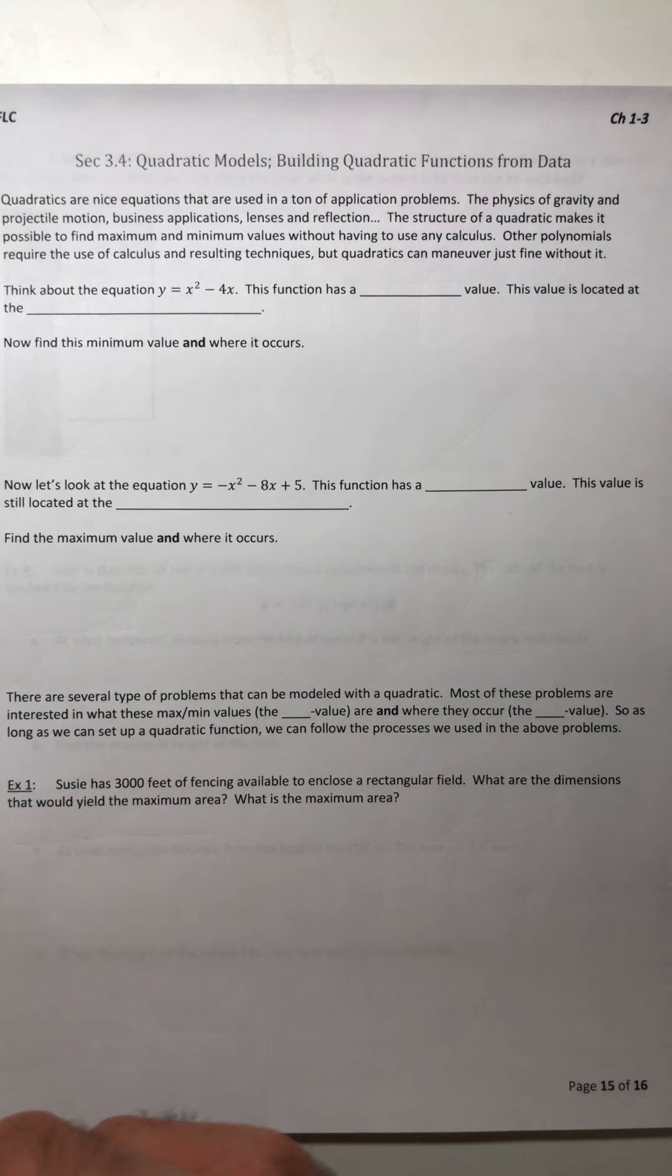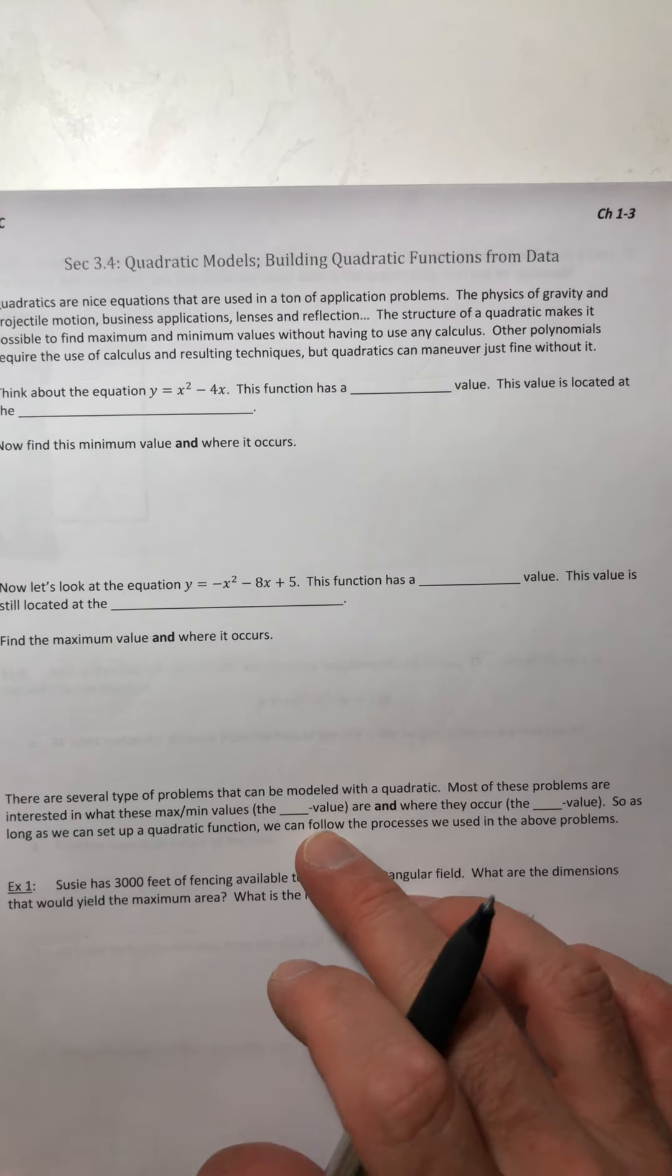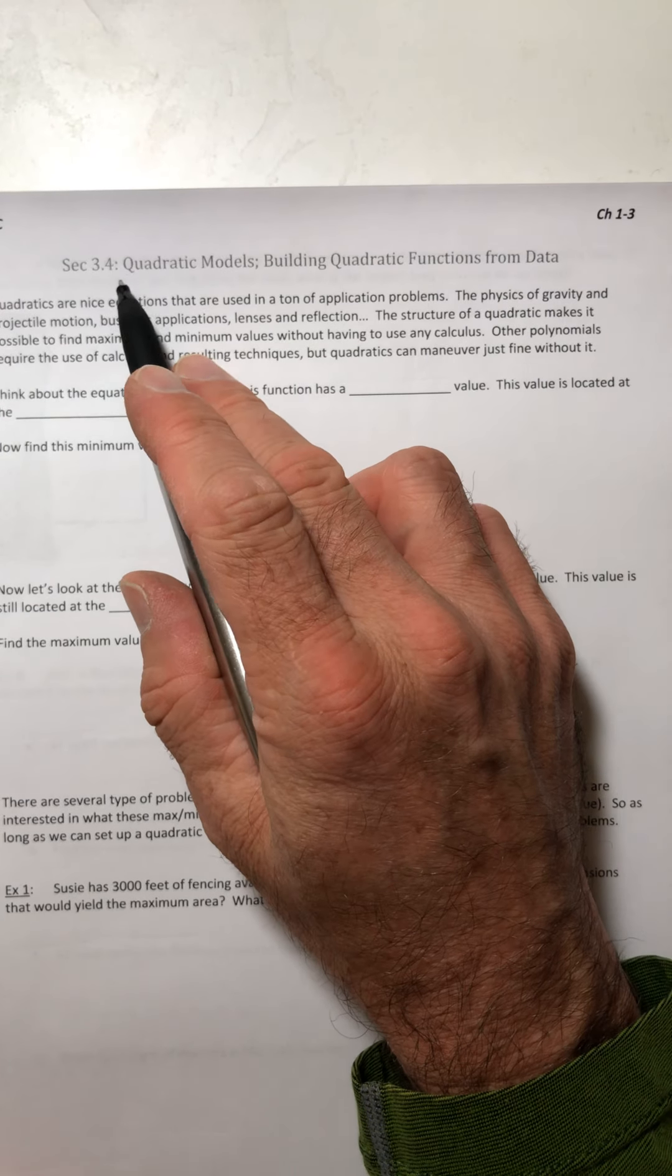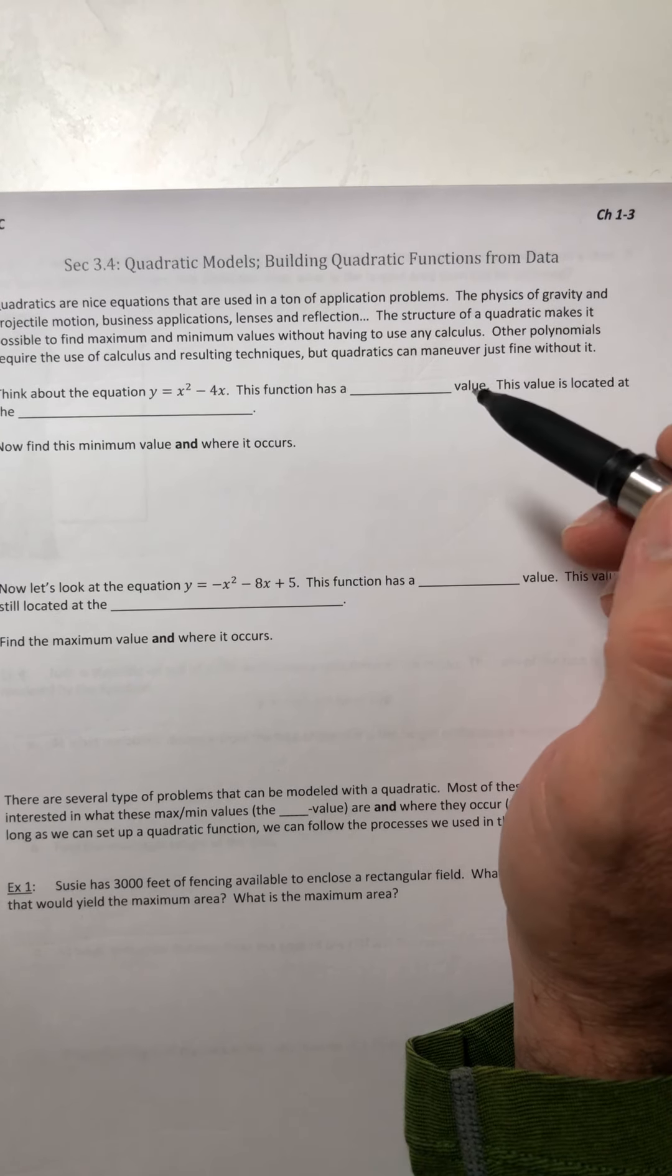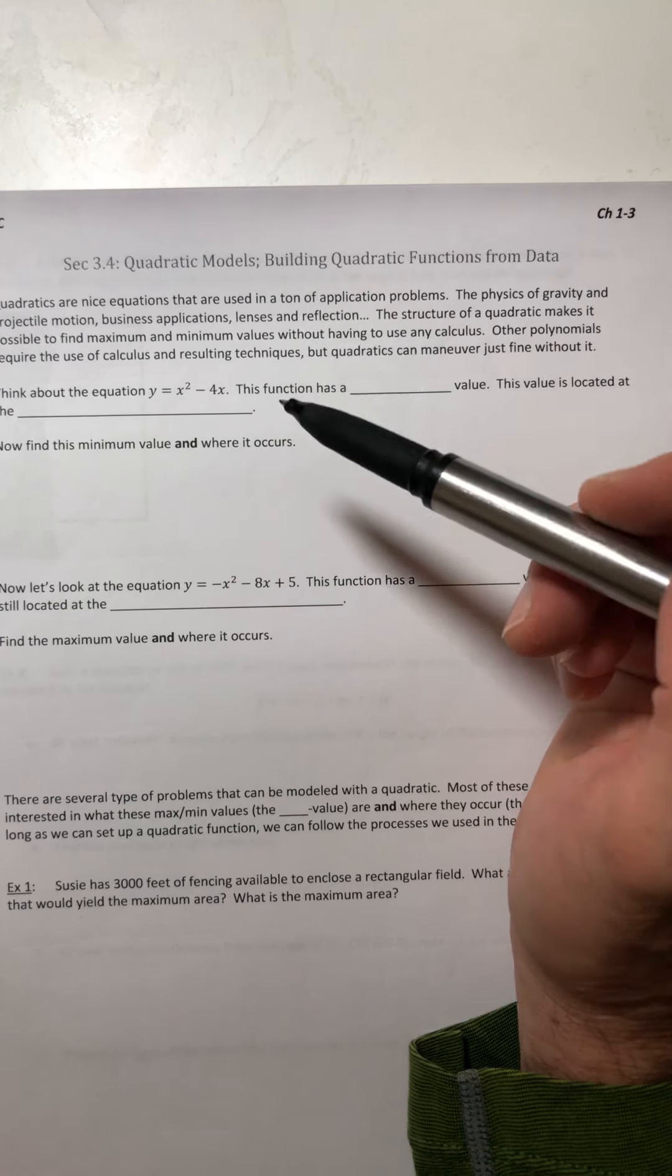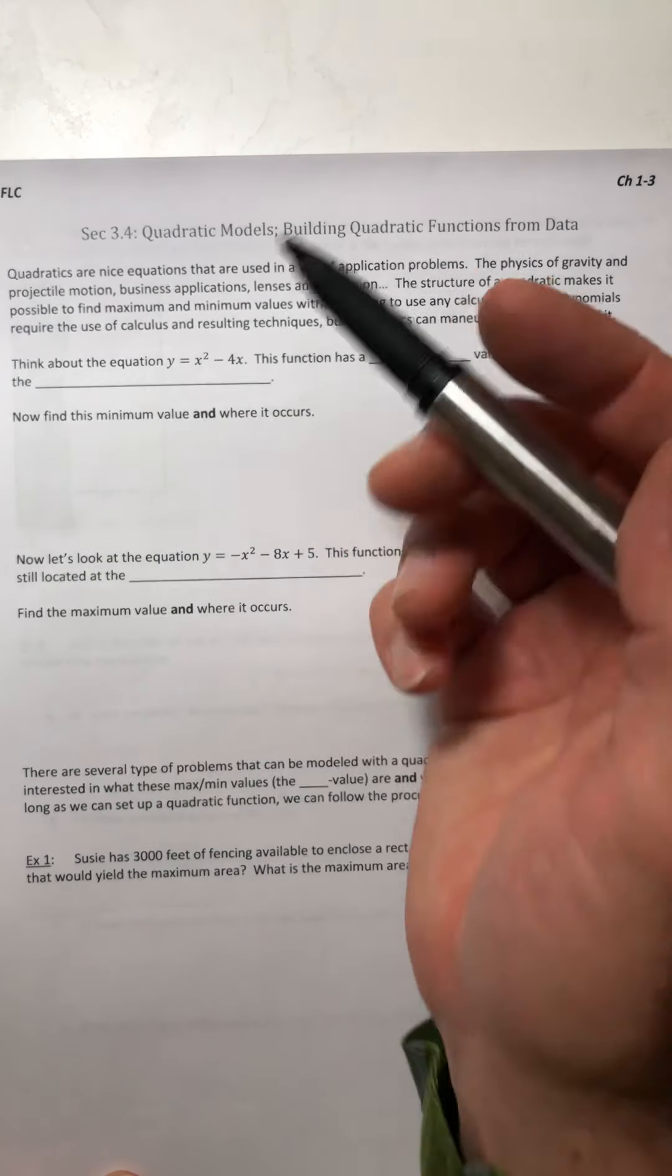All right, this is going to be the last section in this unit. So we're going to be looking at quadratic models and being able to build a quadratic function from data and then answer some questions. It's the only section we're doing in chapter 3. So here we go.